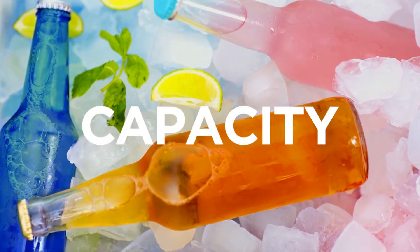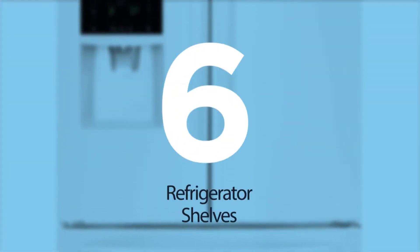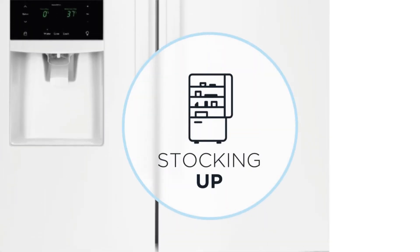First, how much capacity do you need? More than 27 cubic feet overall, 6 refrigerator shelves, and 3 refrigerator drawers are right if you like to do a lot of stocking up.